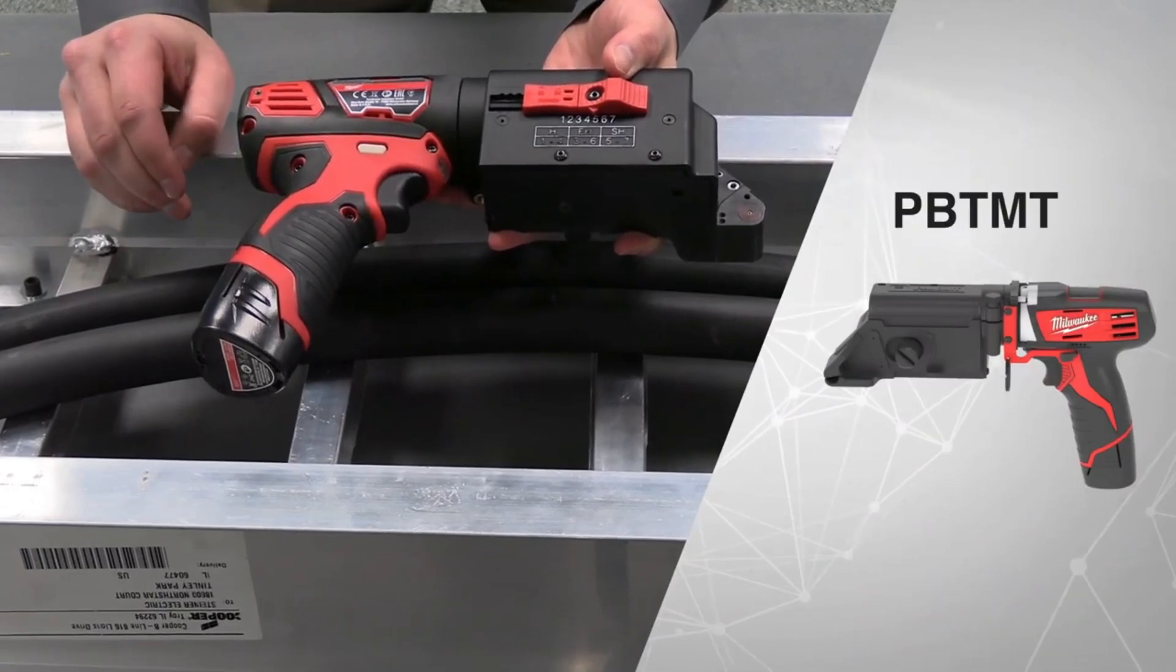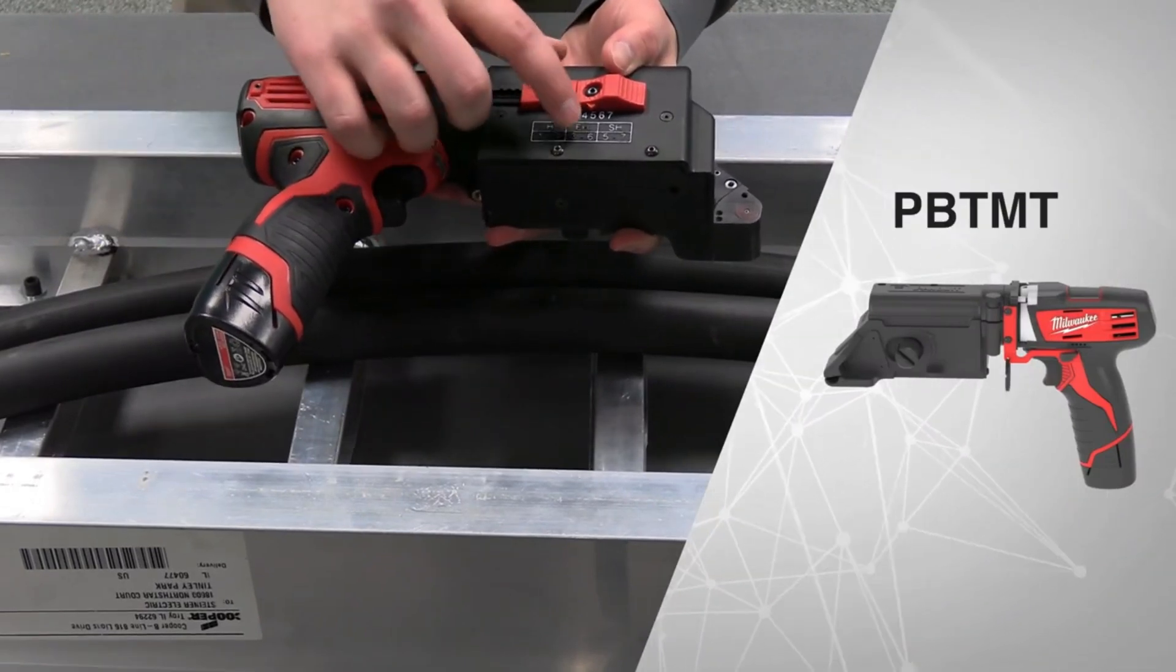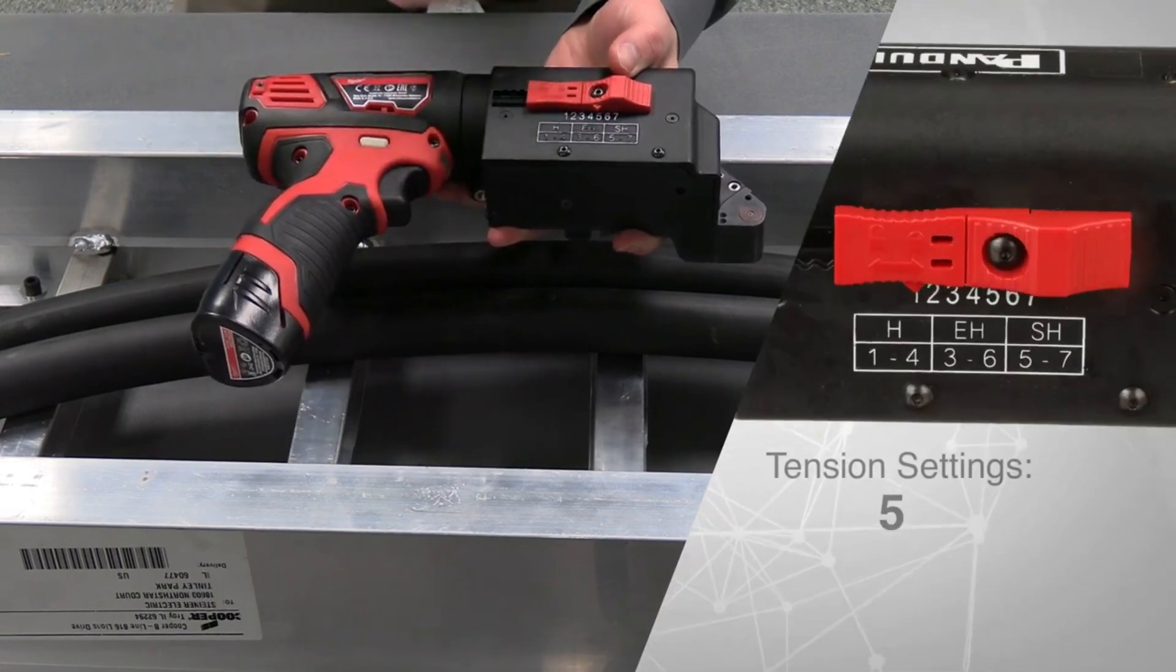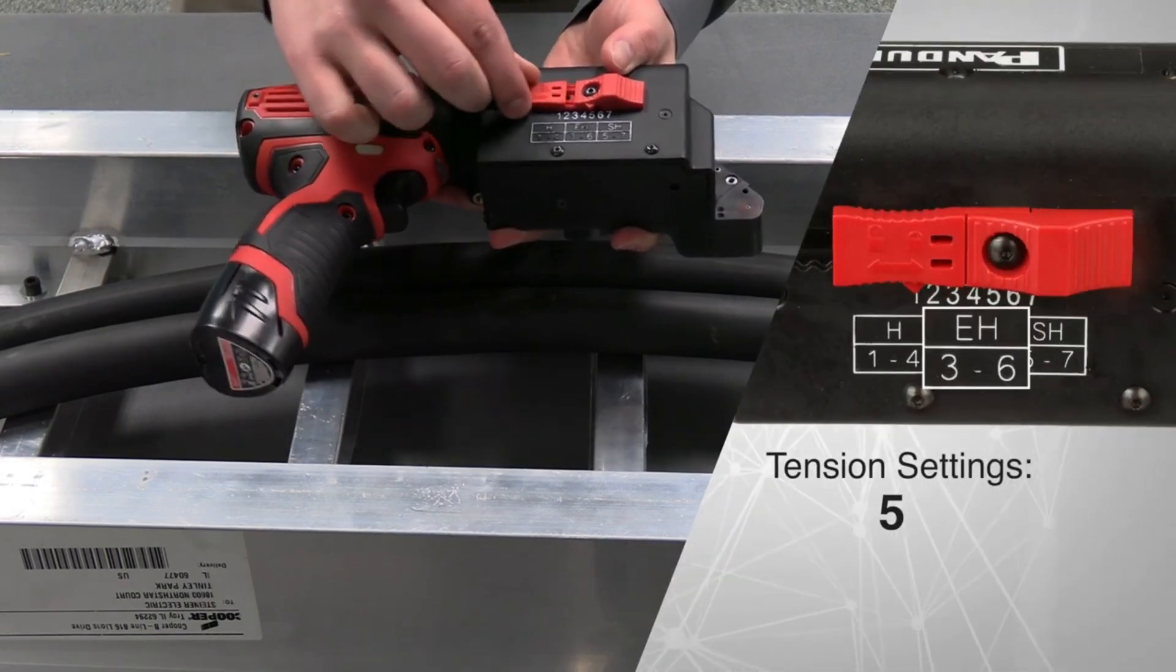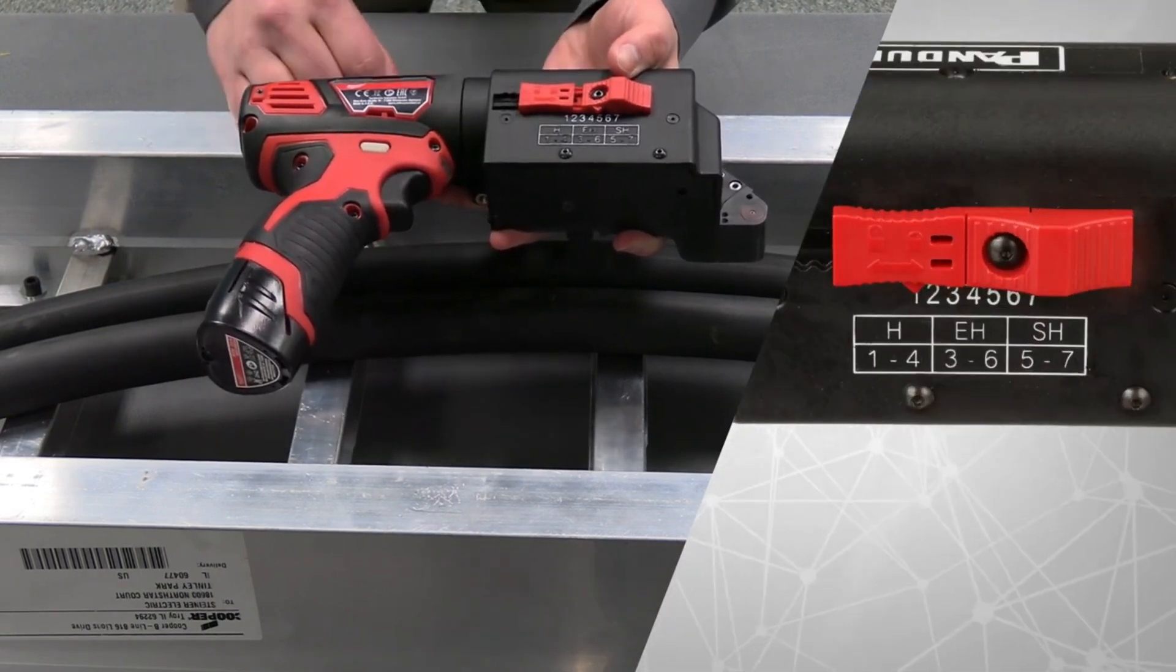I've got a battery platform PBTMT today that can do heavy, extra heavy, and super heavy ties. We're going to be installing three extra heavy ties, so I've already got it set to five, but if we needed to adjust that, we just unlock the slide and send it up the scale.